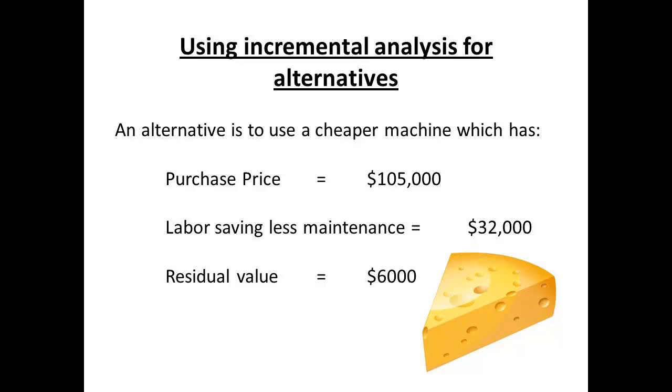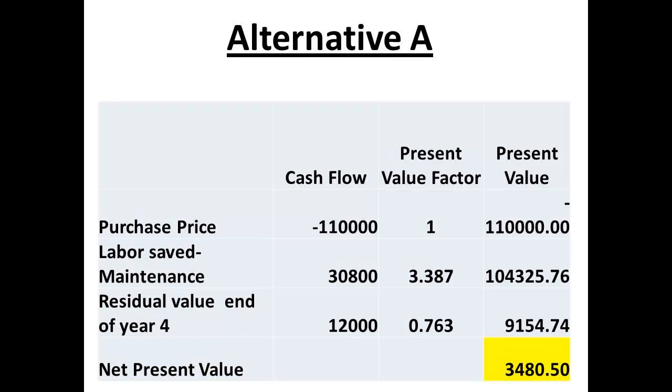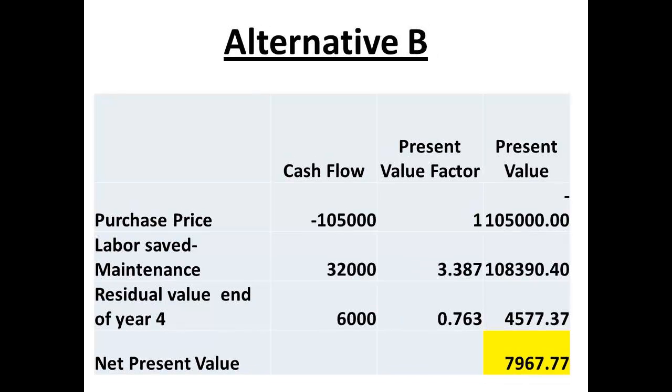If the business considers an alternative, such as using a cheaper machine, then incremental analysis can be applied. The proposed alternative is for a machine costing $105,000, with a residual value of $6,000, and producing a cash flow for each of the four years of $32,000. The machine costing $110,000 produced a return of $3,480.50 on the original investment above the value of the investment. Alternative B, using the slightly cheaper machine, produces a return of $7,967.77.